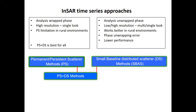Accordingly, we can define stable scatterers. For example, persistent scatterers (PS) and good distributed scatterers (DS). There are algorithms already available, but we cannot use them directly on big data because it is not efficient. We need a better scalable processing chain, for example, to work on reduced data sets for distributed targets.